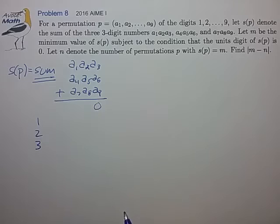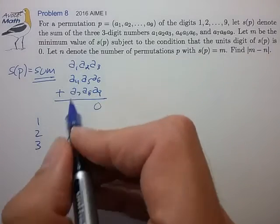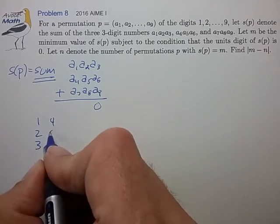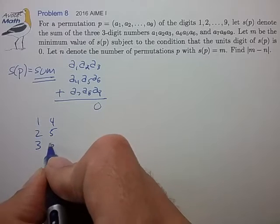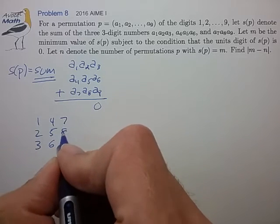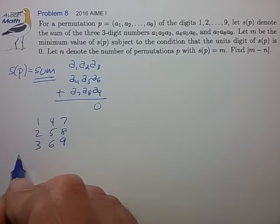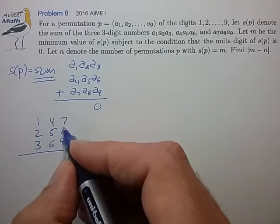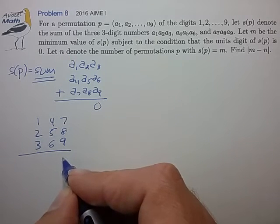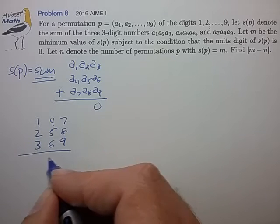Let me write that out. And that leaves us the digits 4, 5, 6, 7, 8, 9 left for the tens and the units place. And we're told that the units digits have to add up to 0 somehow, or at least leave a 0 in the sum.